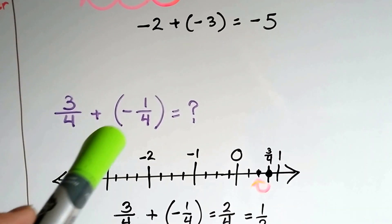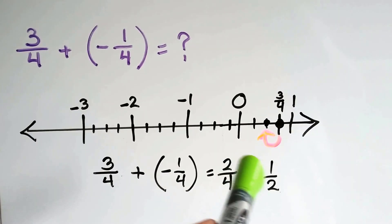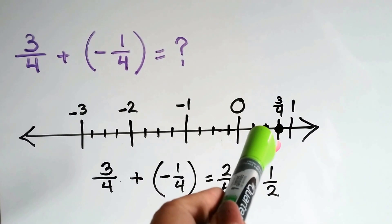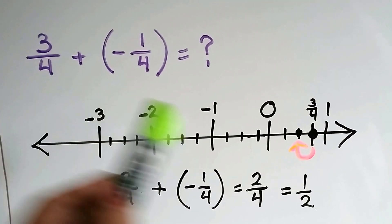What if we had 3 fourths plus negative 1 fourth? All right. Well, here's 0 on the number line. Here's 1 on the number line. And each of these little lines are a fourth. So that's 1 fourth, 2 fourths, 3 fourths. So we start at the 3 fourths.